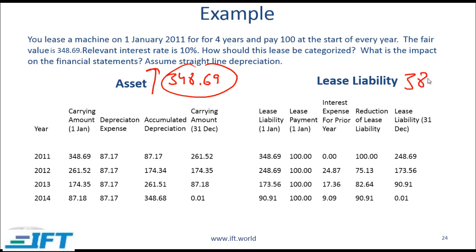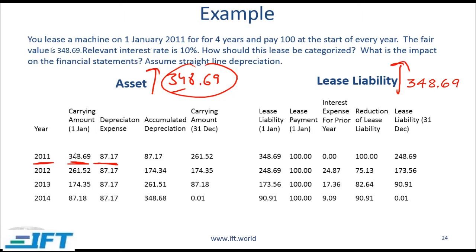Initially assets go up by 348.69, and the lease liability is the same amount — 348.69 — so the lease liability also goes up by this amount. The asset part is straightforward: at the start of 2011 the carrying amount is 348.69, depreciated over 4 years straight-line, giving depreciation of 87.14 per year. Over 4 years the asset value comes down to essentially 0 — the remaining amount is just a rounding error.